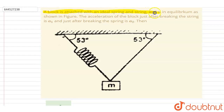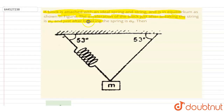Hello everyone. A block is attached with an ideal spring and string and is in equilibrium as shown in the figure. The acceleration of the block just after breaking the string is A1. So you have to find out the acceleration.